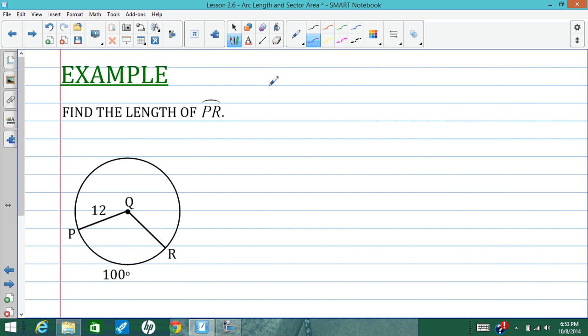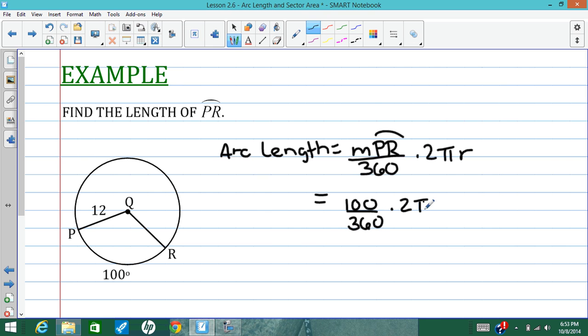So pause the video now and find the length of arc PR. So I'm, of course, going to start with the formula. The arc length is going to be the measure in degrees of PR divided by 360 times the circumference. So I have 100 over 360 times 2 times pi times 12.